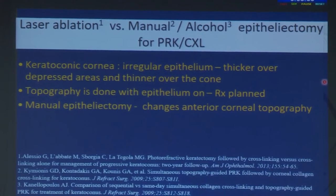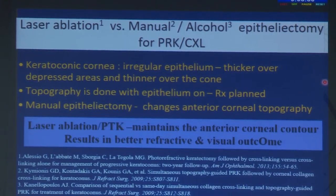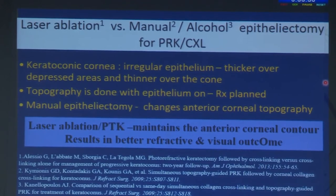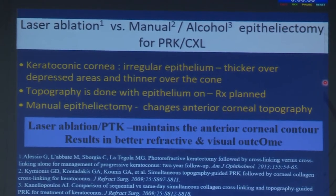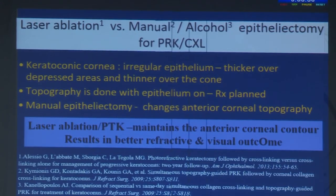Regarding manual epitheliectomy versus PTK: lasers are not able to map the variable epithelial thickness from center to periphery. In keratoconus, the epithelium can partially mask the cone. If you manually remove the epithelium, which is variable from center to periphery, you get a slightly altered topography on which you're treating. A PTK removing a uniform 50 or 40 microns over the entire treatment zone may be better, giving a topography that mimics pre-epithelium removal.